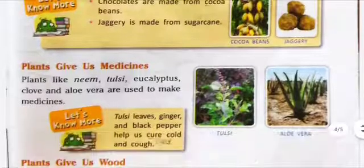Fill in the blanks with the correct word. Number 1 — We get paper from the bamboo plant. Number 2 — We get gum from the acacia tree. Number 3 — Aloe vera and neem are used to make medicines.